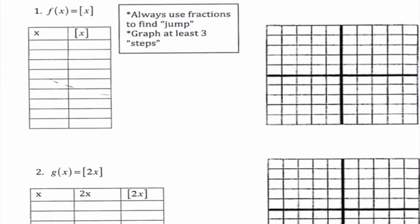Now we're actually going to put all this knowledge to use. With our greatest integer functions, we're starting with the basic one. We have two columns: the first column represents our input x, and the final column represents our output y — which is f of x, the greatest integer less than or equal to x. Since there's nothing else inside the greatest integer function other than x, that's a sign we only need two columns.